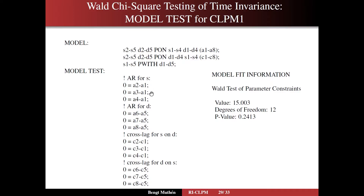That's for the S variable — self-esteem. There are four parameters, so there are three comparisons to the first; it should have three comparisons, not four. Same thing for D, which starts with A6 compared to A5, seven to five, eight to five. Then you have the cross-lags for S on D — you take the first four with a comparison to the first. And for D on S, you take the last four with comparison to their first, which is C5. Out comes the Wald test with degrees of freedom 12 and value 15 and a p-value. We cannot reject invariance in this model, but that is due to both models being far from the true model.